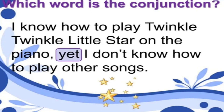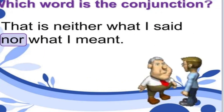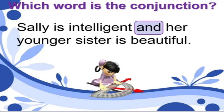Example: 'I know how to play Twinkle Twinkle Little Star on the piano, yet I don't know how to play other songs.' 'Yet' is used in situations of contrast — despite something. Example: 'That is neither what I said nor what I meant.' 'Nor' is used for two non-contrasting grammatically negative items — 'not plus not,' used in negative sentences. Final example: 'Sally is intelligent and her younger sister is beautiful.' 'And' connects both, adding information or ideas. Thank you.